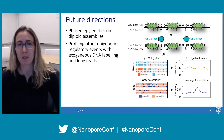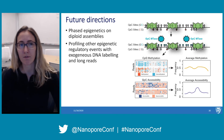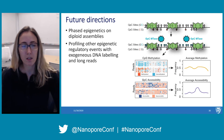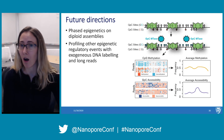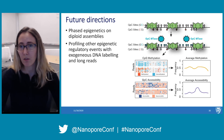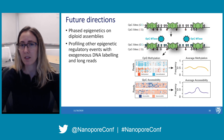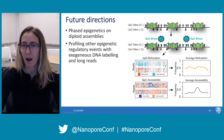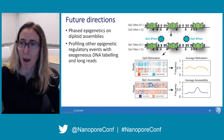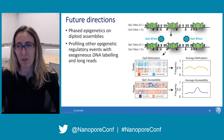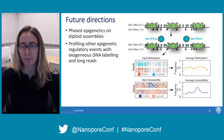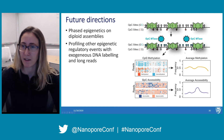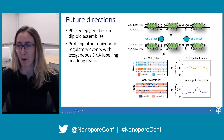Our next directions include phased epigenetics on diploid assemblies and profiling epigenetic regulatory events with other long read methods. Other long read methods would allow us to map to these large repetitive regions and probe epigenetics within them — for example, exogenous labeling of the DNA to look for protein binding events or nucleosome occupancy.